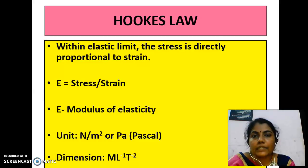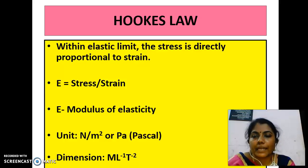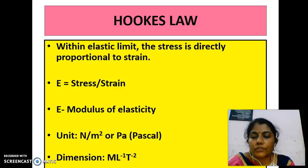Stress and strain can be connected with the help of Hooke's law. Hooke's law states that within the elastic limit, stress is directly proportional to strain. E is called the modulus of elasticity, and E is equal to stress per strain. The unit of E is Newton per meter square (Pascal), and its dimensions are M L⁻¹ T⁻².